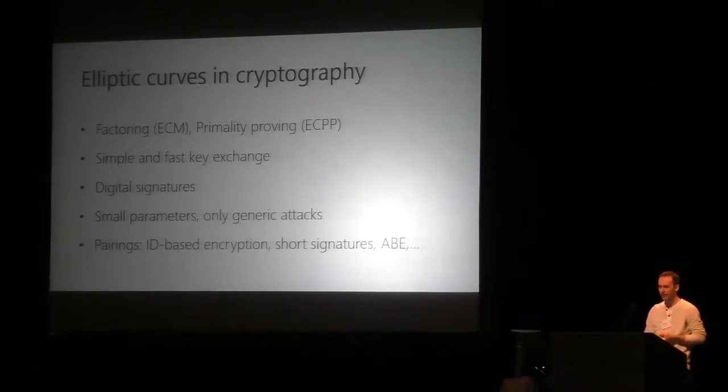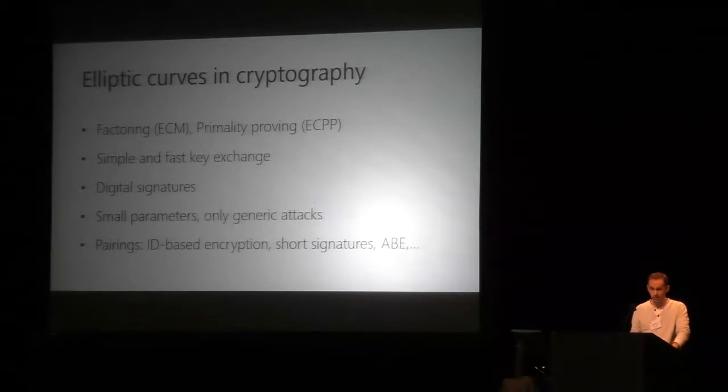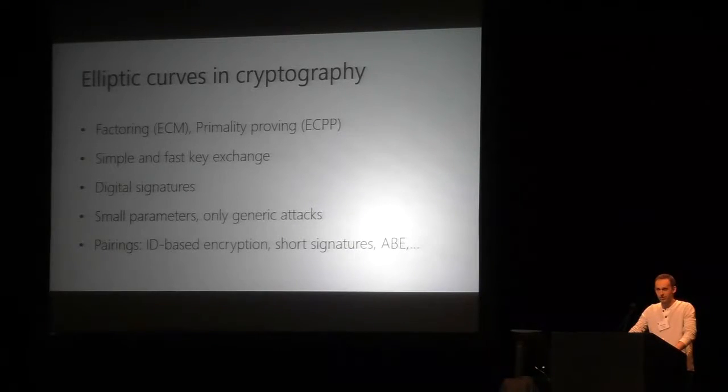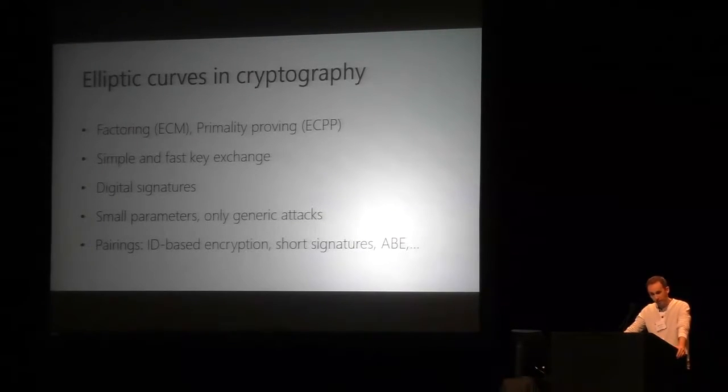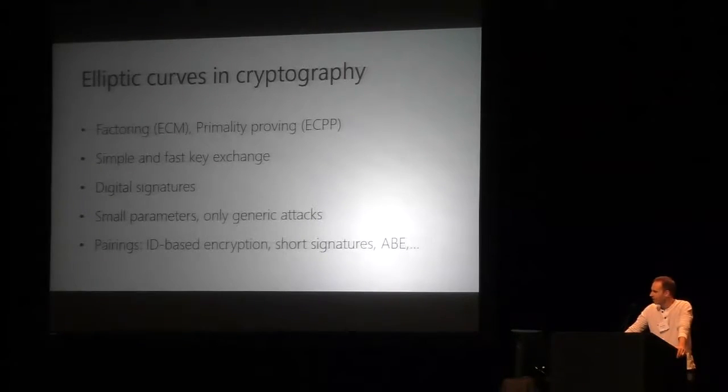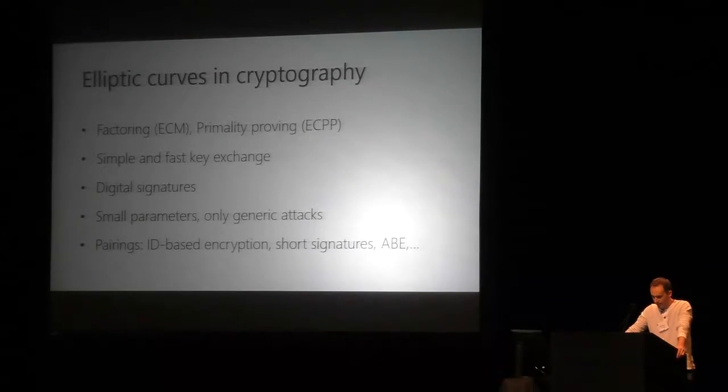I know there are still some haters out there, so some people still say what have elliptic curves ever done for us. So these are all the awesome things we can do with elliptic curves: factoring, primality proving. We have simple and fast key exchange and digital signatures - ECDHE, ECDSA, X25519, EDDSA, and even very modern things with funny names like 4Q and SchnorrQ. All this comes with very small and compact parameters due to the availability of generic attacks only. And not to forget pairings - these are the only practical multilinear maps we have. They brought a lot of nice applications.